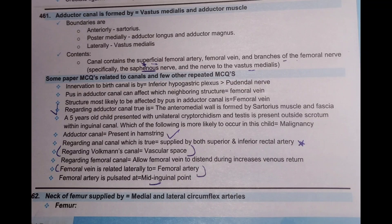We are going to talk about the adductor canal. The adductor canal is formed by vastus medialis and the adductor muscle. Looking at the boundaries: anteriorly and posteriorly, adductor longus and adductor magnus; laterally, vastus medialis.